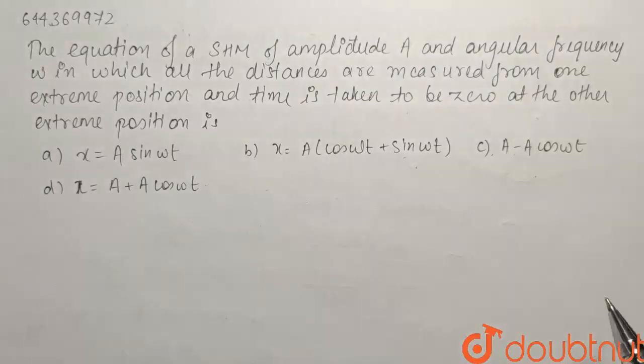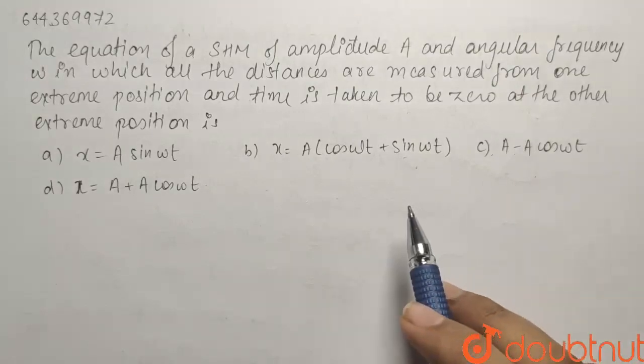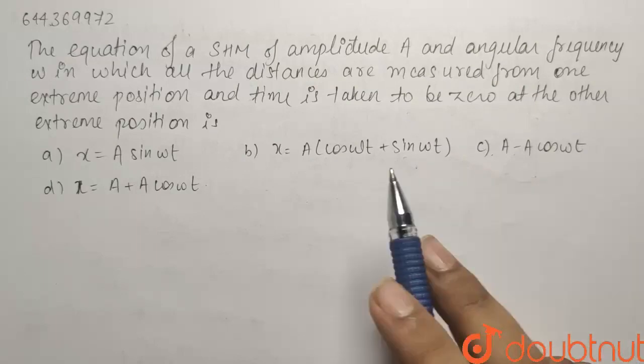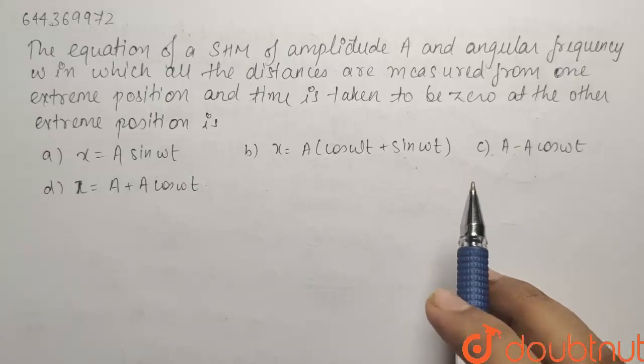Here we have a question from the topic SHM. The equation of a SHM of amplitude A and angular frequency omega, in which all the distances are measured from one extreme position and time is taken to be zero at the extreme position is: